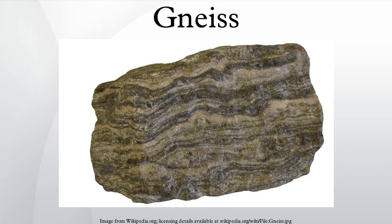Composition: Gneissic rocks are usually medium to coarse foliated and are largely re-crystallized but do not carry large quantities of micas, chlorite, or other platy minerals. Gneisses that are metamorphosed igneous rocks or their equivalent are termed granite gneiss, diorite gneiss, etc.